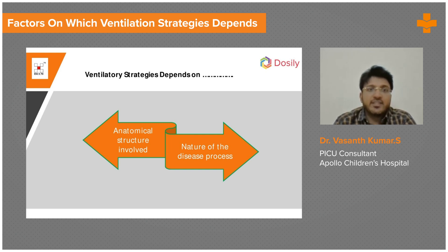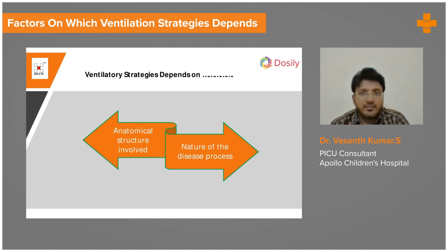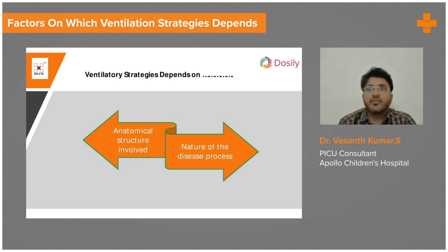You need to identify the structure involved — whether it is CNS, respiratory, or cardiac. The nature of the disease process matters: if you have identified a parenchymal problem, a lung problem, you will have to identify whether it is a problem in the airway or in the parenchyma. Depending on that, you will try to ventilate the patient. These are the things you must look into before putting any child on a ventilator — which organ is involved, and if it is the lung, which part of the lung.